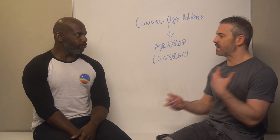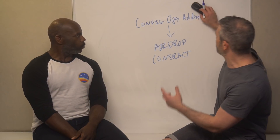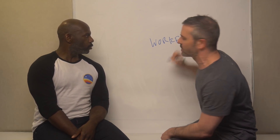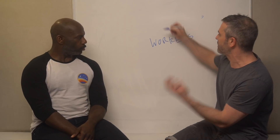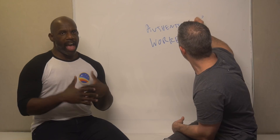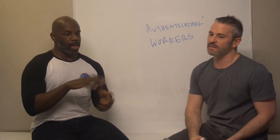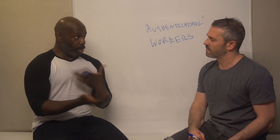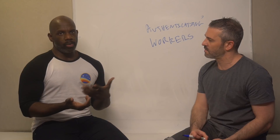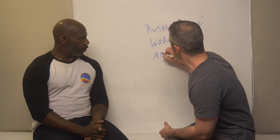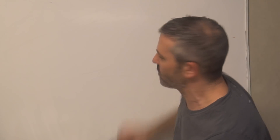After that, we move to authenticating the workers. We have worker addresses and a workers contract — the workers contract administers the workers. The point of this is to enable horizontal scaling so that we can be more performant, as well as improve key management security. This helps with managing the users.